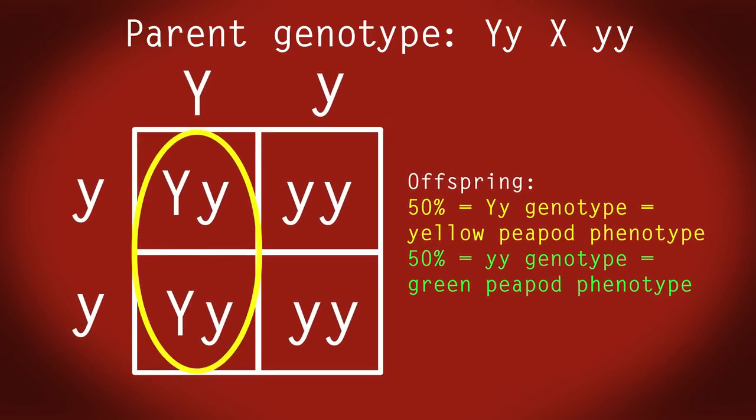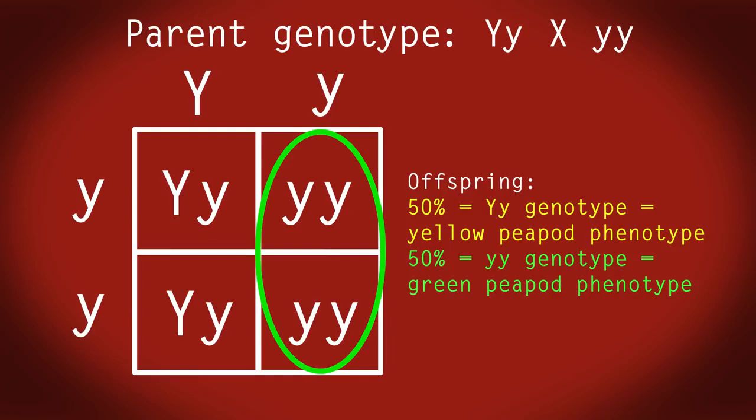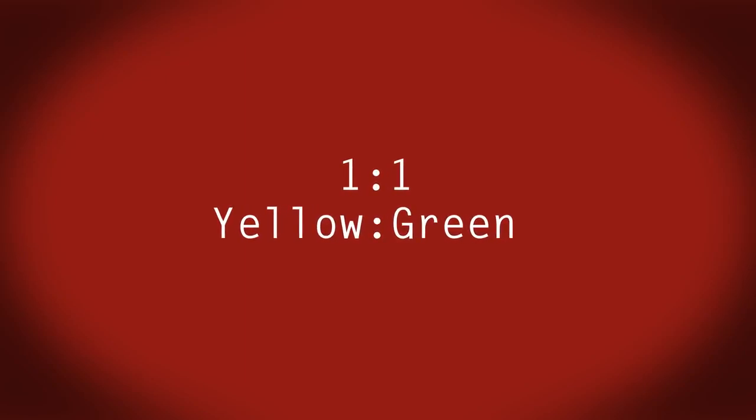We have two Yy genotypes, which means 50% of these offspring would have the dominant yellow pea pods. And we have two yy genotypes. So 50% of these offspring would have the recessive green pea pods. We could write this as 1 to 1 yellow green phenotypic ratio.